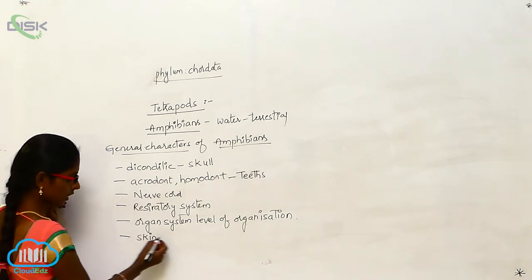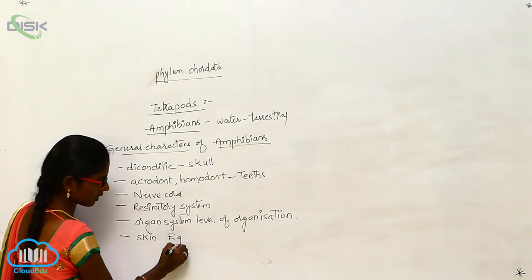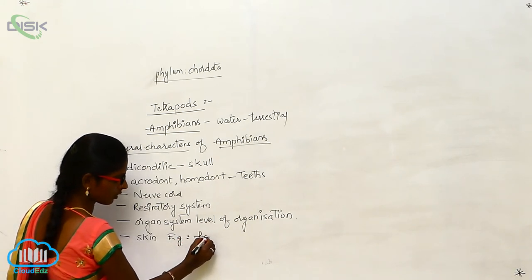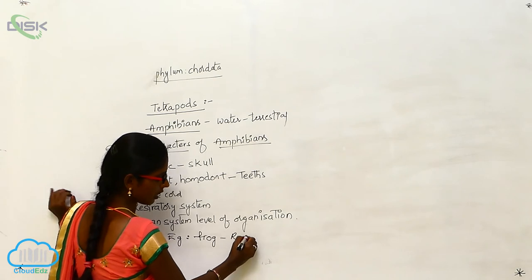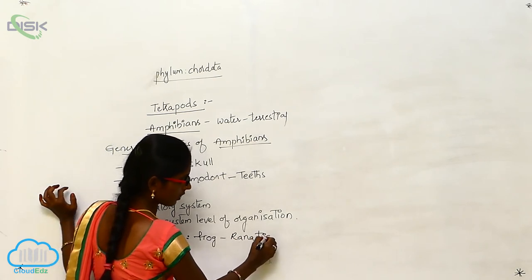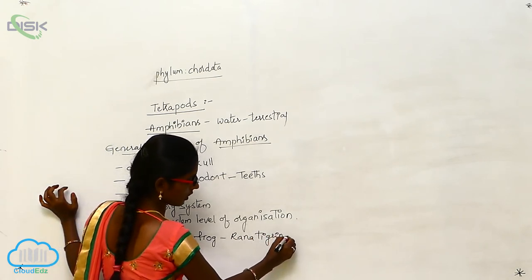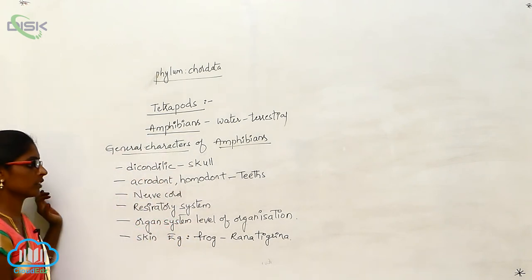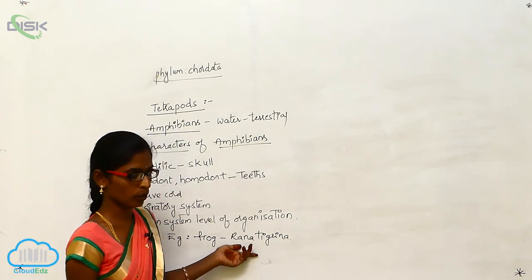So example for the amphibians is frog. Frog. That is the Rana tigrina. So Rana tigrina. It is the Indian frog.